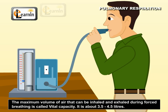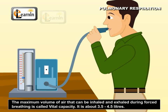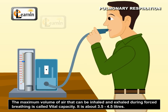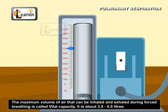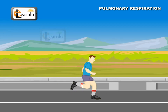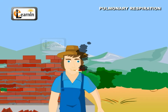The maximum volume of air that can be inhaled and exhaled during forced breathing is called vital capacity. It is about 3.5 to 4.5 liters. Vital capacity is higher in athletes and mountain dwellers and lower in elderly people and cigarette-smoking persons.